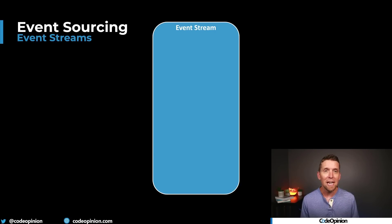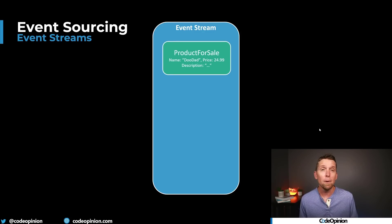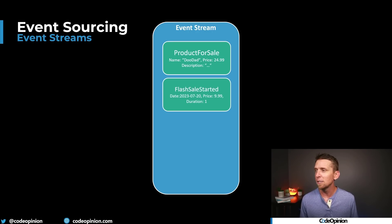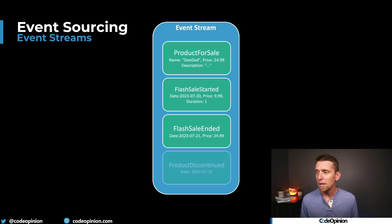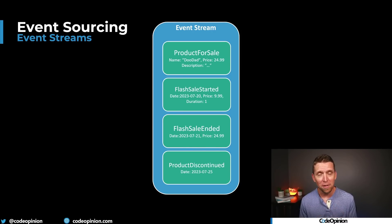The last step of this journey is thinking about events as a way to record state — that's event sourcing. Rather than storing only current state, you record all the state transitions, all the business concepts that got you where you are now. The first thing that happened: we added a product to our catalog, recorded name, price, description. Then a flash sale started on a particular date with a new price and duration. Then the flash sale ended and the price went back to $24.99. Then maybe the product was discontinued. We are recording all these events as state, rather than just current state.